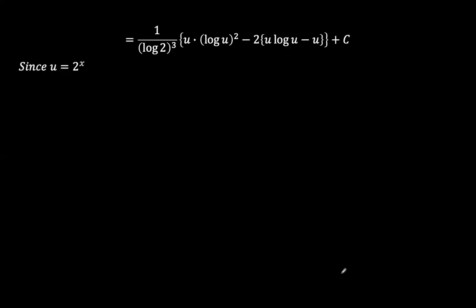So the integral of 2 to the power x times x to the power 2 is 1 over log 2 to the power 3 in place of u we have 2 to the power x in place of log u squared. We have log 2 to the power x squared, minus in place of u here, log 2 to the power x. In place of log u, log 2 to the power x, minus in place of u, 2 to the power x.